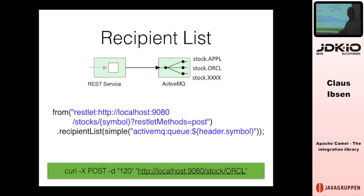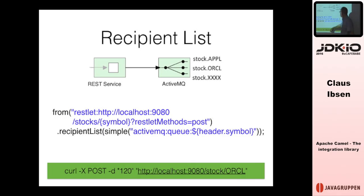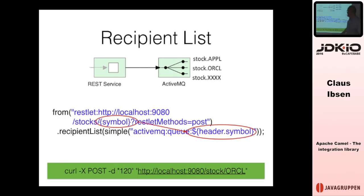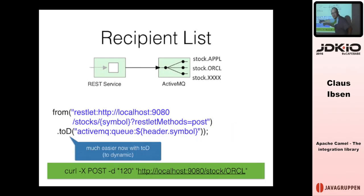Another great pattern is the recipient list, which lets you send a message to one or more recipients computed dynamically based on message content. For example, if you have a REST service sending a stock quote to a queue where the symbol is part of the queue name, you can expose the REST service where the symbol is dynamic, mapping to the queue name as a Camel header. In recent versions of Camel we introduced 'toD' — dynamic to — so you just write it directly, which is a bit shorter.